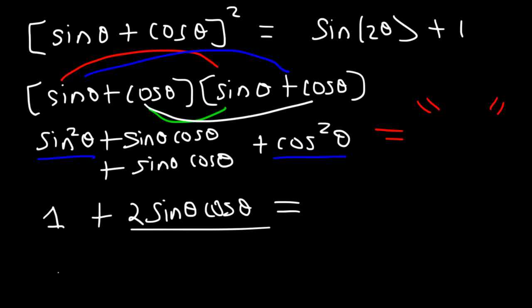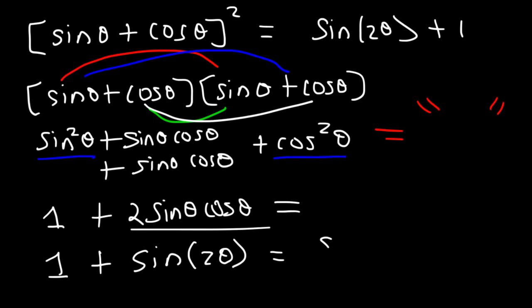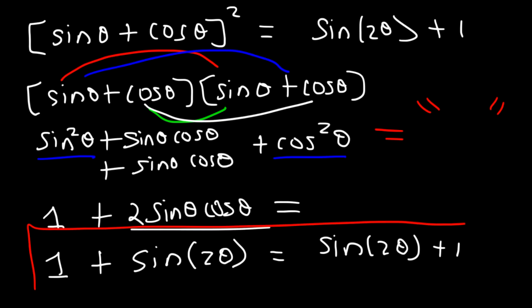Now we have a double angle formula: sin2θ equals 2sinθcosθ. So we've verified the identity — the left side is the same as the right side. 1 + sin2θ is equivalent to sin2θ + 1.